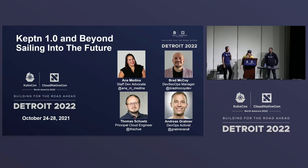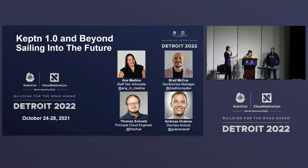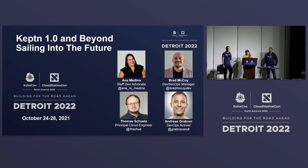I'm Andy Grabner. I work as — I call myself a DevOps activist at Dynatrace. DevOps activist means I just try to help people use observability data, because I work for an observability company just like you. It's a great sign that we are two kind of competitors but we are all working together to help the community become better in their delivery practices and reliability practices.